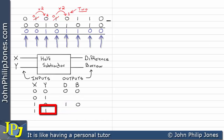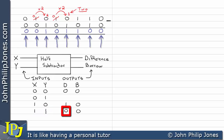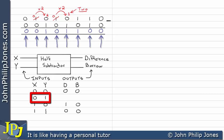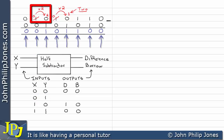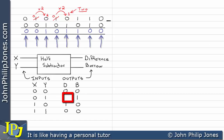If we now consider x=1 and y=1, we're going to have a difference of 0 and we didn't need to borrow. Now consider the combination where x=0 and y=1 — we're taking 1 from 0, which means we need to borrow. When we borrow, it becomes 2, and when 1 is subtracted from 2 we have a difference of 1.